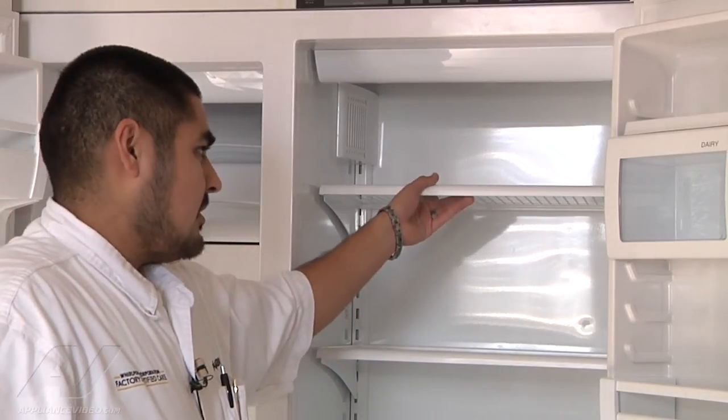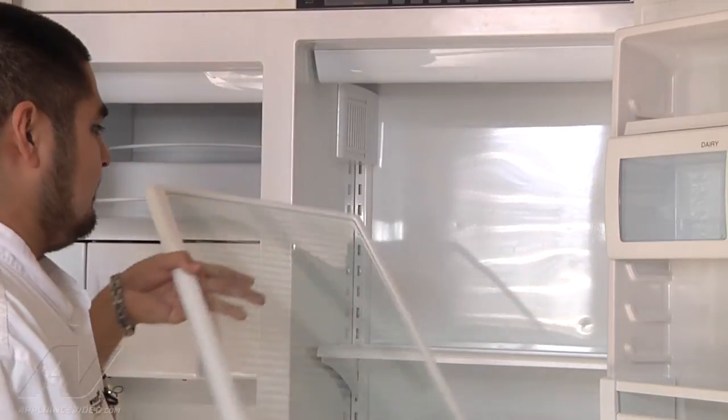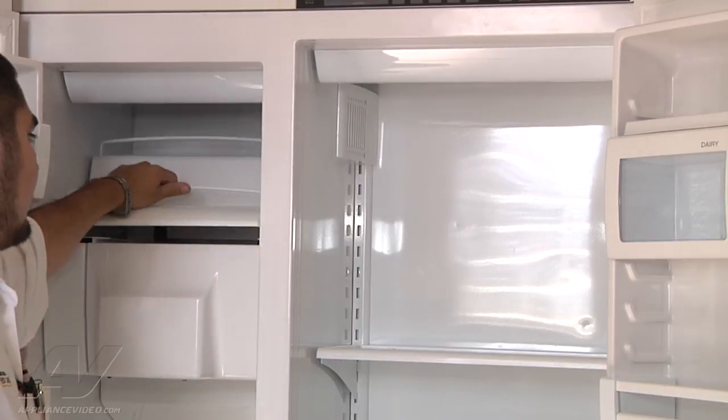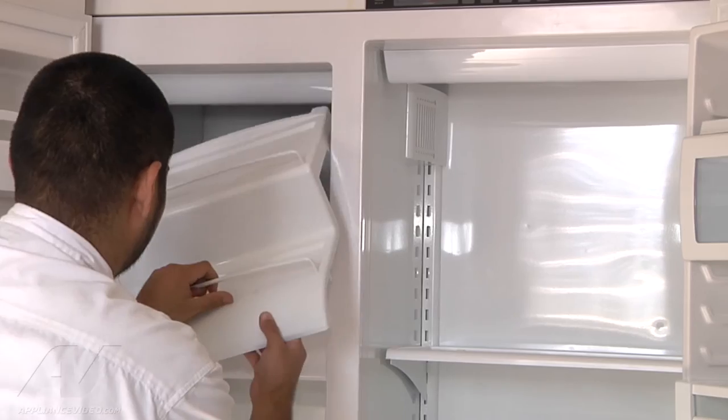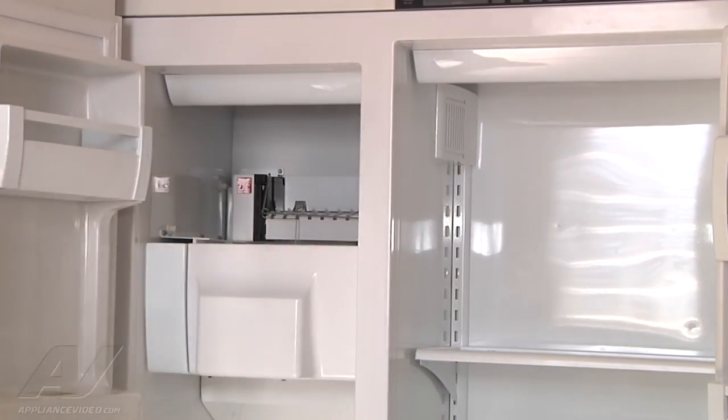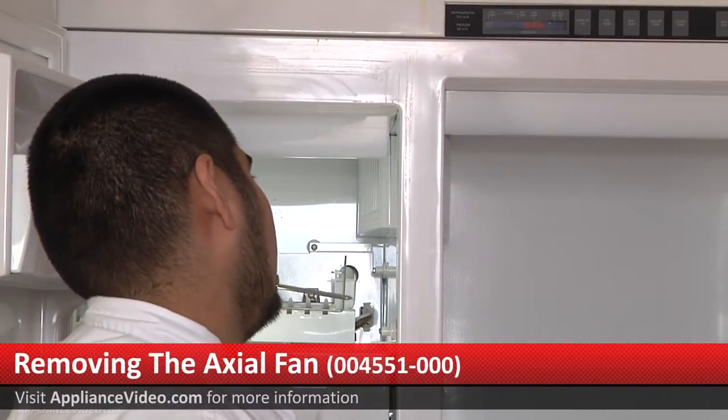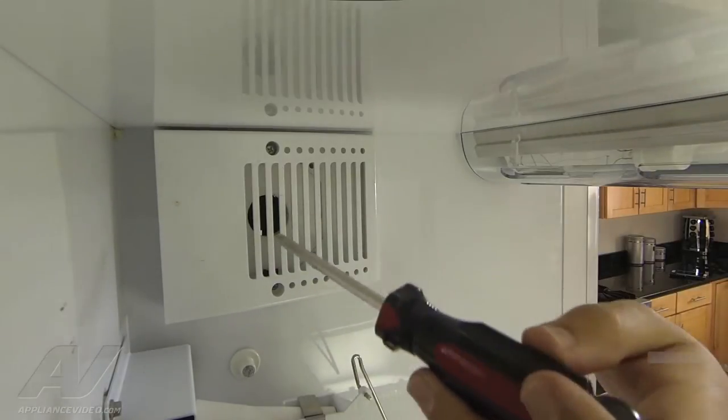In the freezer section, remove the ice bin cover by pulling straight out. Sometimes you'll have to angle it out to get it out of the freezer compartment. To remove the freezer fan cover, there are two Phillips-style screws—one at the top and one at the bottom.